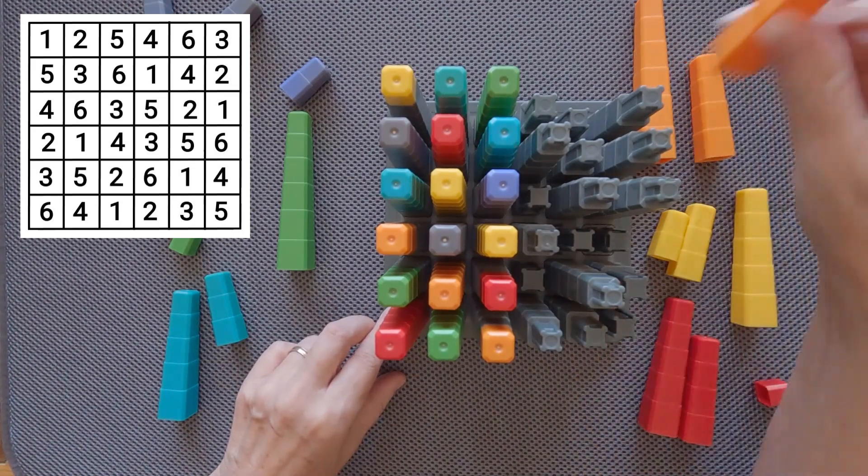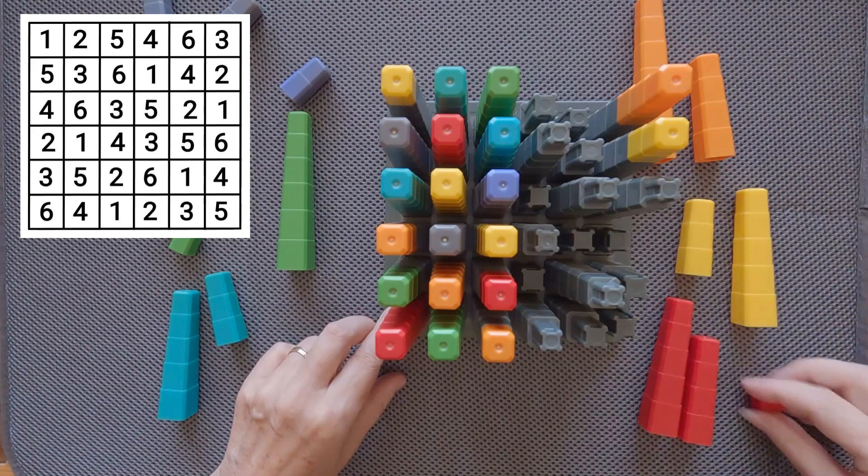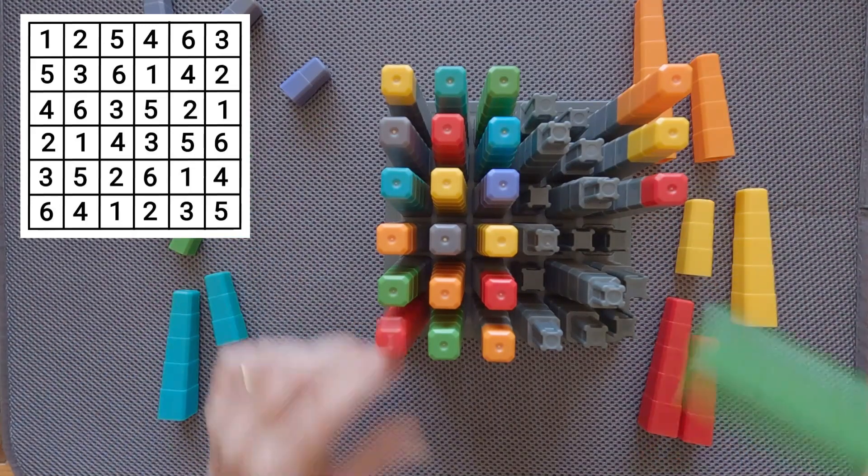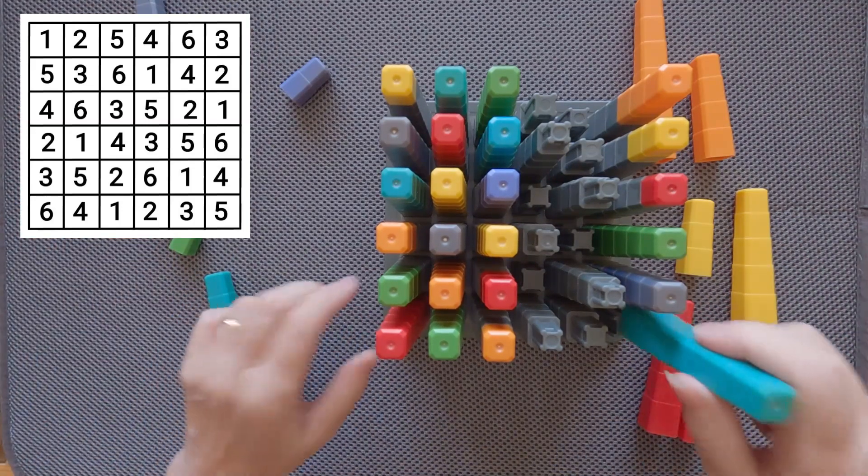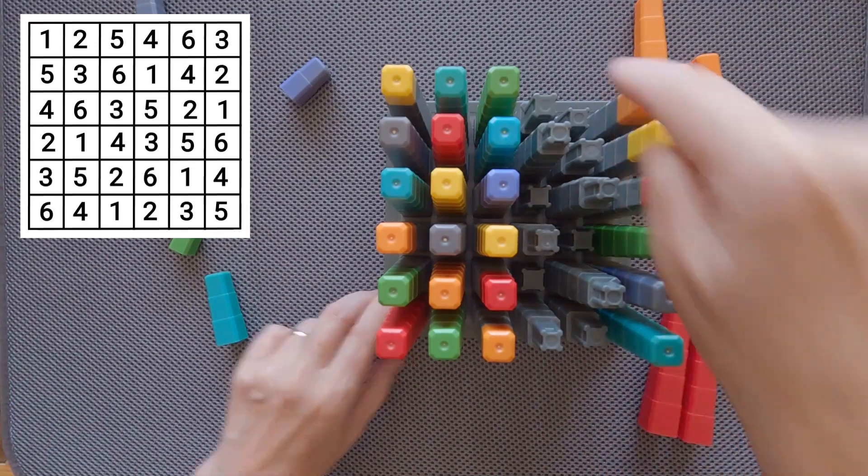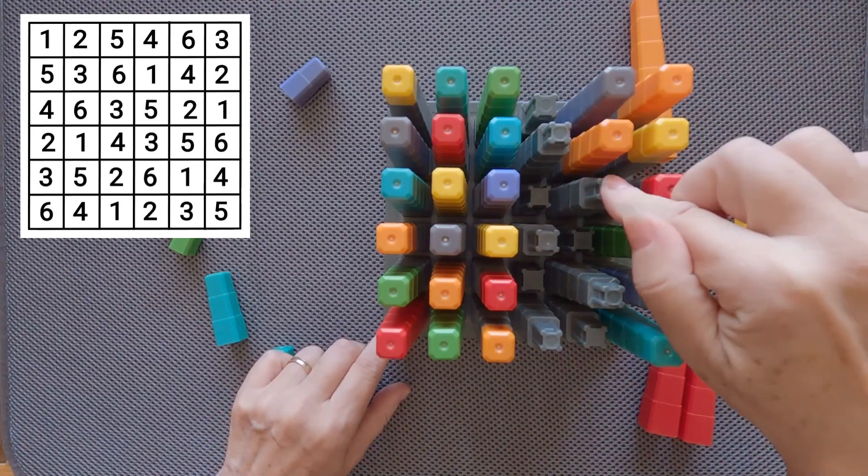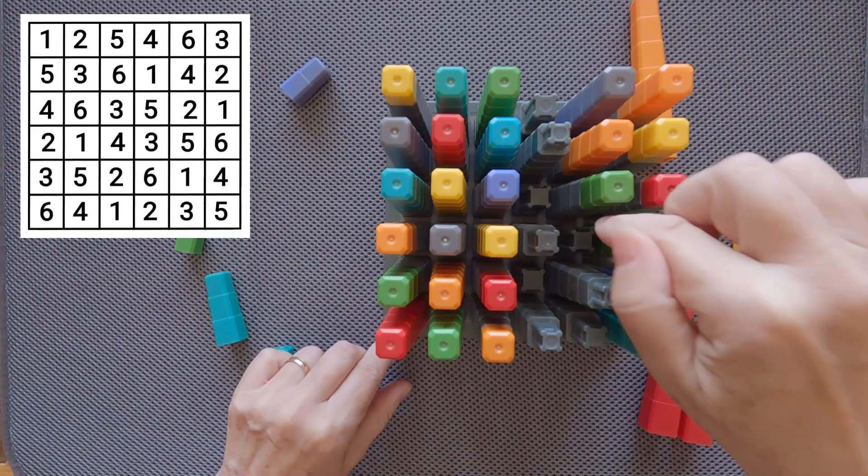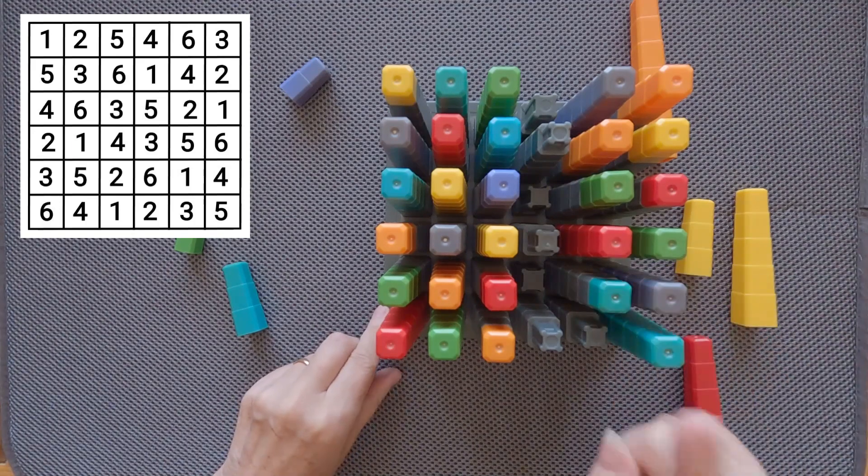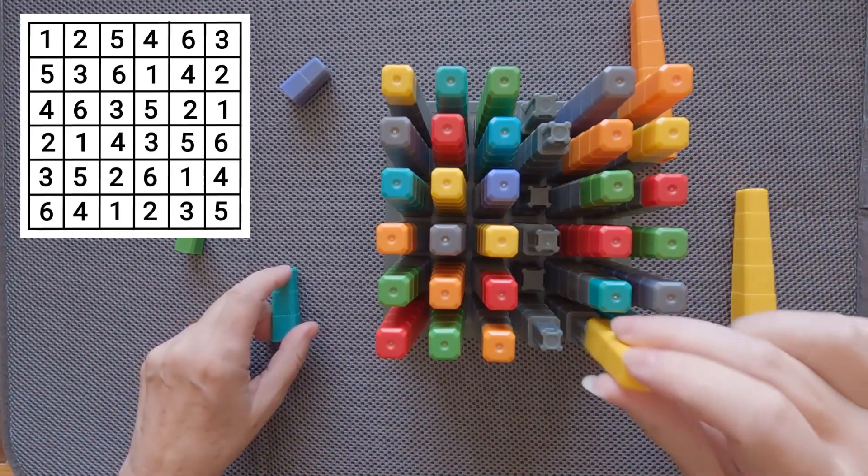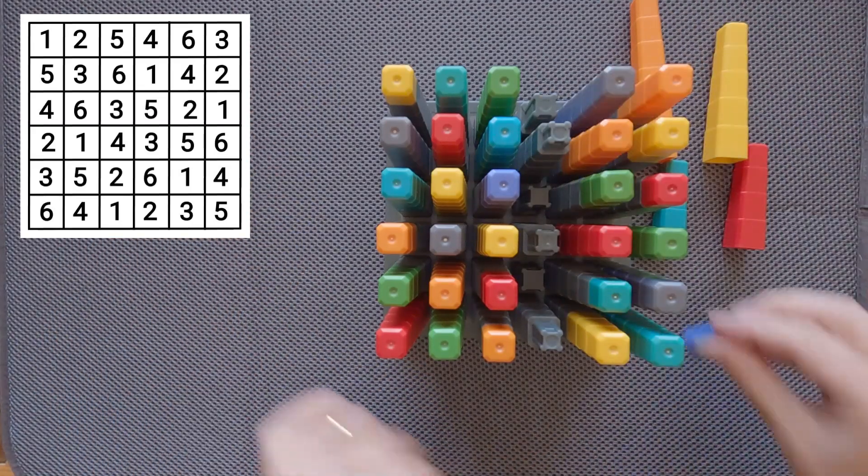I'm going to make this row: three orange, two yellow, one, six green, four, and five turquoise. One turquoise and three yellow. Okay, we have six pieces left and we're going to place these six pieces.